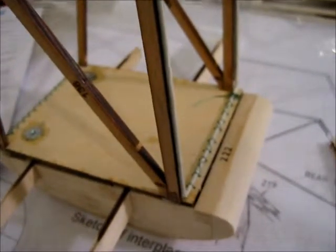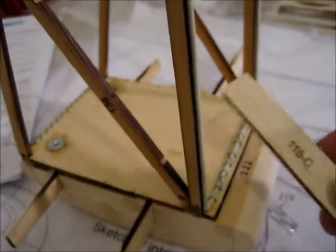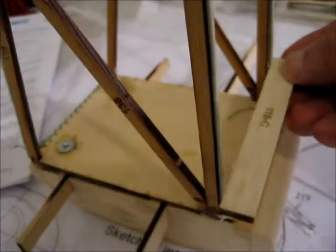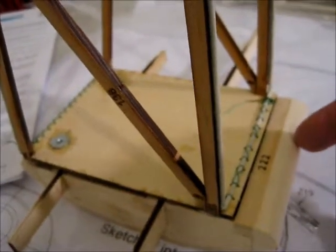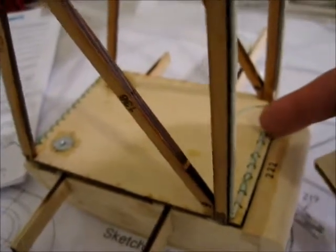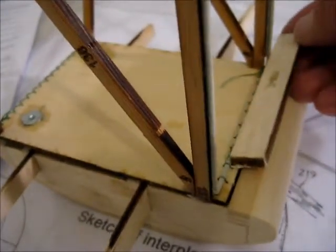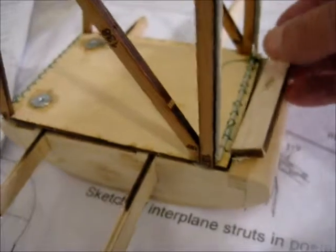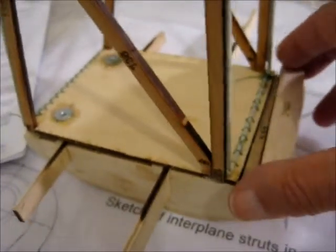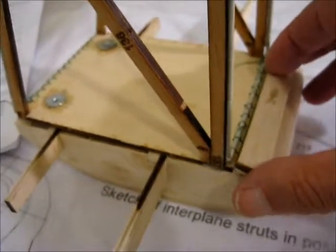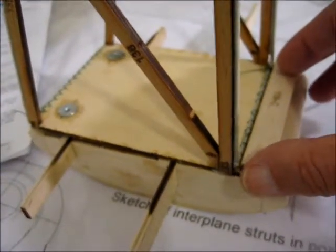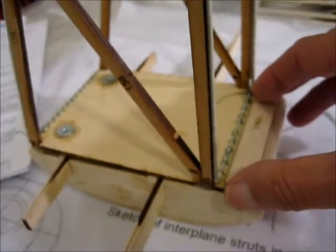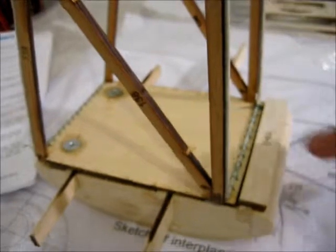This is nearly the end of the cabane structure. We have this piece here that we need to fix to the front to fair in from the leading edge to the underside of the cabane. I'm going to cut a notch in the back of this piece and glue it to the center section so that it overlaps the front edge of the platform, then blend it into the leading edge.